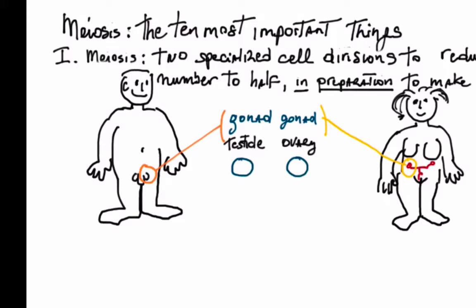In each organ, specialized diploid cells, the germline, enter meiosis to produce respectively four sperms or one egg and two polar bodies or terminal cells.